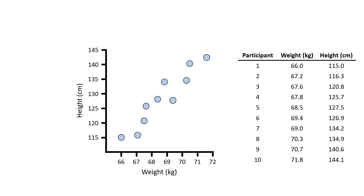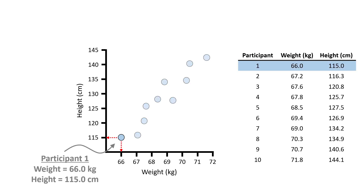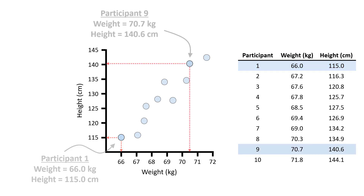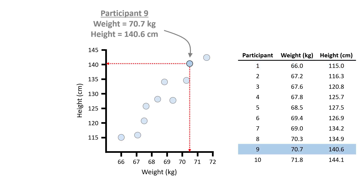So for example, this point indicates the data from participant 1, who had a weight of 66kg and a height of 115cm. And this point here indicates the data from participant 9, who had a weight of 70.7kg and a height of 140.6cm.